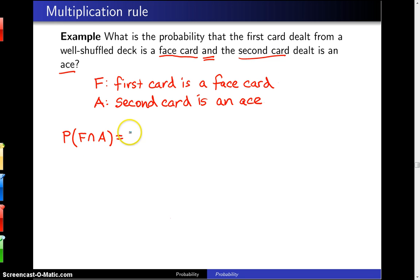This can be written as the probability of A given F times the probability of F, and that can be seen by simply taking the definition of conditional probability, that is the probability of A given F, and simply multiplying both sides of that definition by the probability of F.